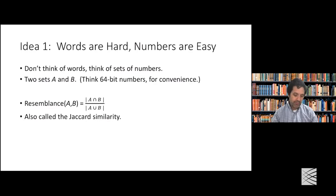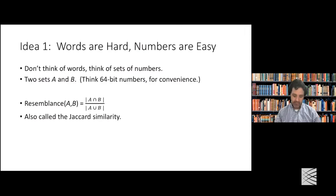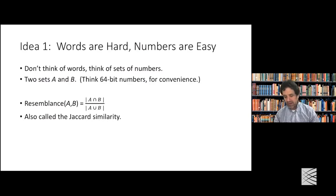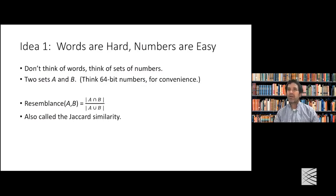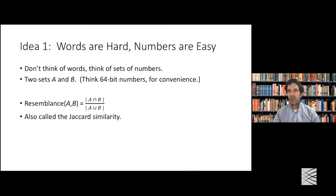The idea is that we have two sets A and B of numbers — we can think of them as 64-bit numbers for convenience. What we're going to call the resemblance is the size of the intersection over the size of the union. We didn't actually know this at the time, but this measure is called in the literature the Jaccard similarity.